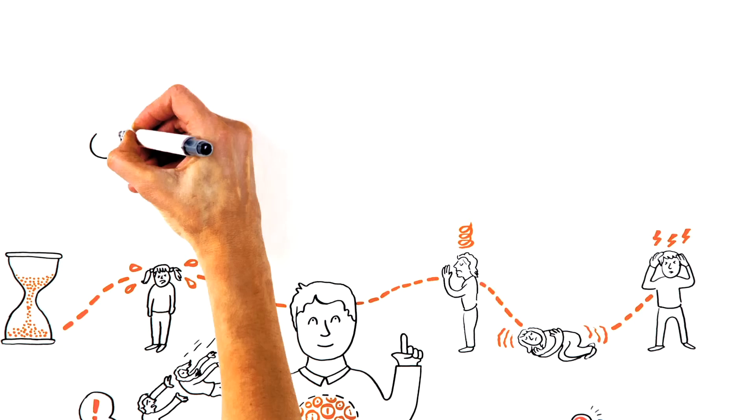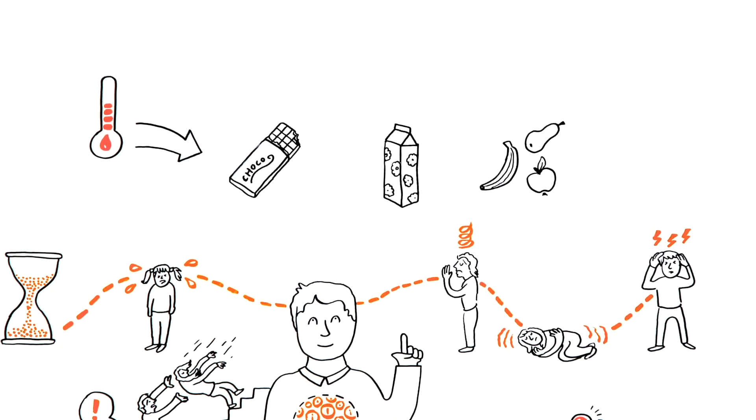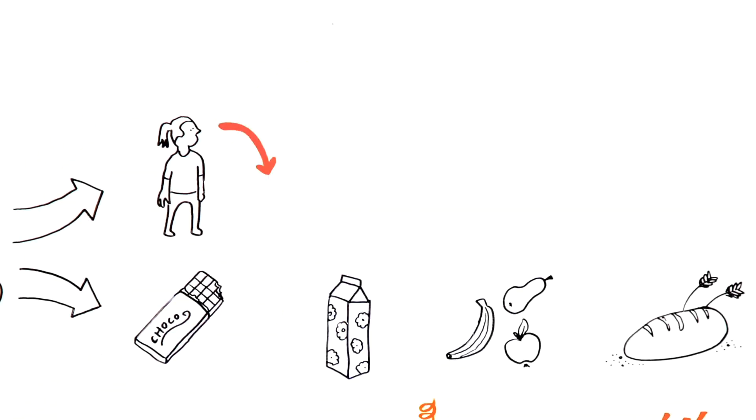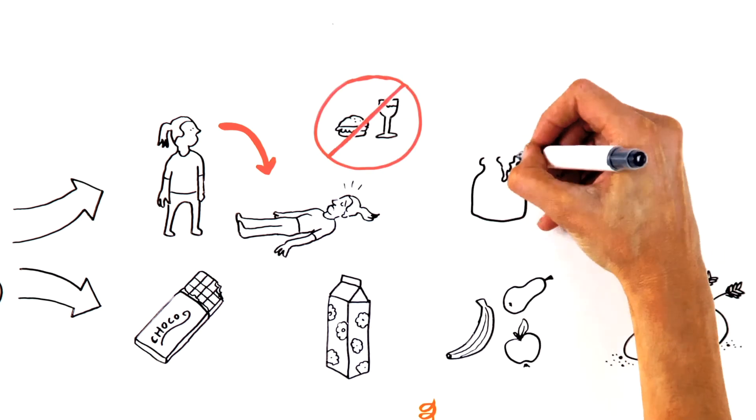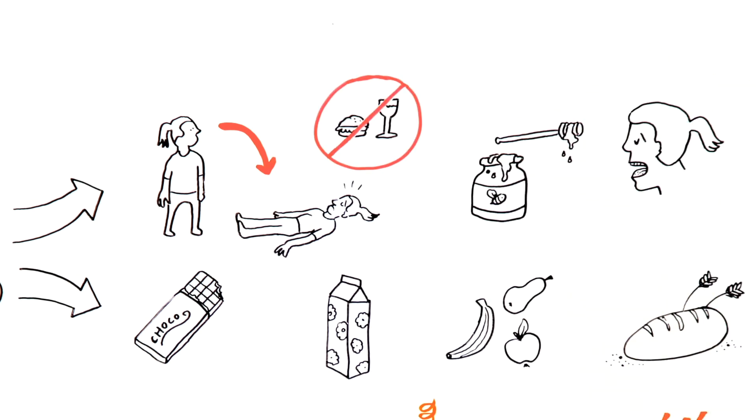To bring the blood sugar level back up to normal, the body needs sugar and carbohydrates. If someone with diabetes falls unconscious, they must not be given food and drink. Instead, try applying some honey to the inside of their cheek, but don't hesitate to call 113.